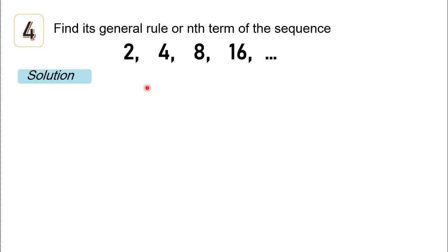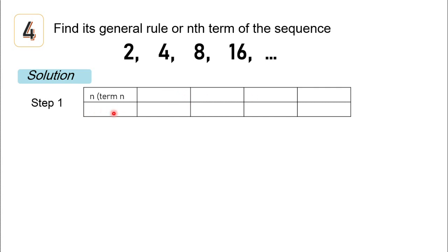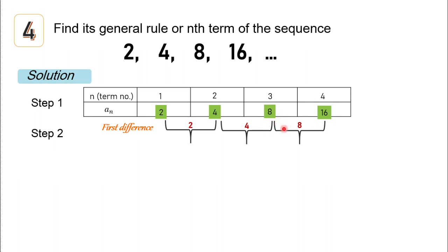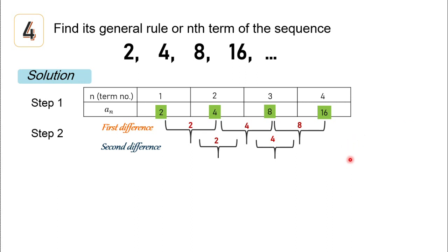Find the general rule or nth term of the sequence 2, 4, 8, and 16. Step one: draw a table with n (the term number) and a-sub-n. Term 1 is 2, term 2 is 4, term 3 is 8, and term 4 is 16. For step two, the first differences are: 4 minus 2 is 2, 8 minus 4 is 4, and 16 minus 8 is 8 — they don't have the same first difference. The second differences are 2 and 4, also not equal, so this is not linear nor quadratic in nature.